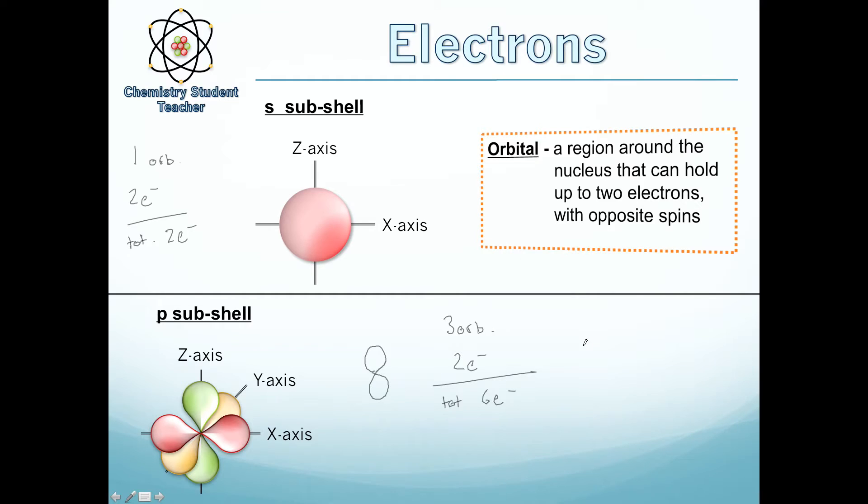At GCSE, you were taught that for shell number one there's two electrons. For shell number two there are eight electrons. For shell number three there are eight electrons, and for shell number four there are two electrons. Now this explains why n equals 1 only has two, because it only has an S subshell.